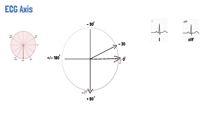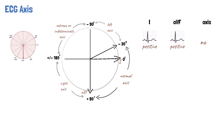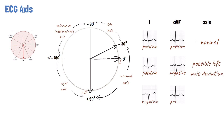The normal QRS axis is between minus 30 to plus 90 degrees. Left axis deviation is present if the major QRS vector is between minus 30 and minus 90 degrees. Right axis deviation is present if the major QRS vector is between plus 90 and 180 degrees. While if the QRS vector is between 180 and minus 90 degrees, the axis is referred to as extreme axis deviation or indeterminate axis. If the deflections are positive in both leads 1 and aVF, it is a normal axis. If the deflection in lead 1 is positive while deflection in aVF is negative, there is a possible left axis deviation. If the deflection is negative in lead 1 and positive in aVF, there is a right axis deviation. While if the deflections are negative in both leads 1 and aVF, there is an extreme axis deviation.